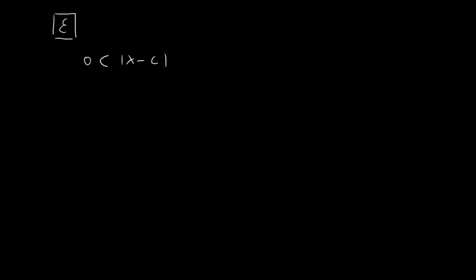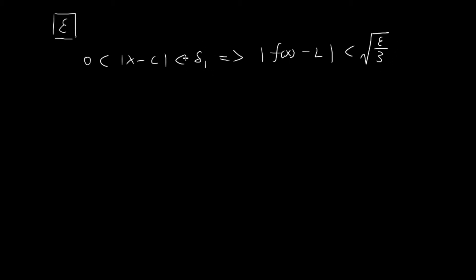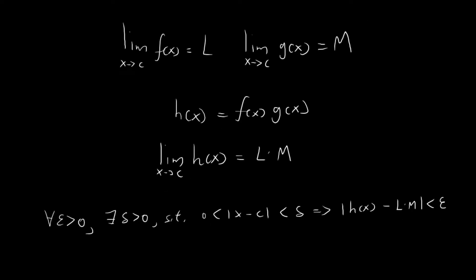Since both limits exist, for whatever value of epsilon we choose, there exists a value delta1 such that if |x - c| < delta1, then |f(x) - L| < √(ε/3). It's perfectly fine to include the square root and divide by 3 — no matter how I change this, I can always find a corresponding delta. This choice of epsilon will help construct the epsilon-delta definition for h(x).